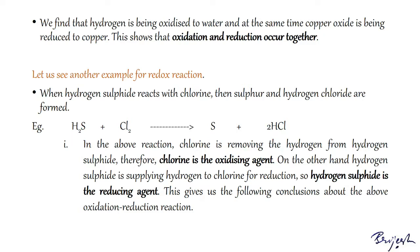Next example: when hydrogen sulfide reacts with chlorine, sulfur and hydrogen chloride are formed. In this reaction, H₂S (hydrogen sulfide) is changing into sulfur — hydrogen is being removed from hydrogen sulfide. By definition, the removal of hydrogen from a compound is called oxidation, so hydrogen sulfide has been oxidized to sulfur.